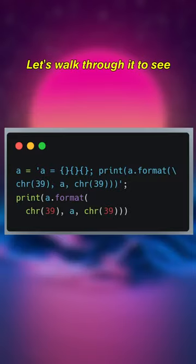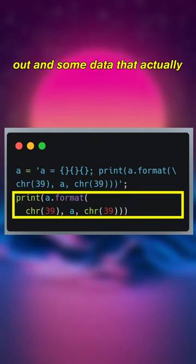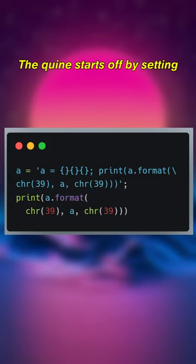All the information it needs is right in its source code. Let's walk through it to see exactly how this is happening. In general, a quine has a piece of code to print it out and some data that actually represents the quine.